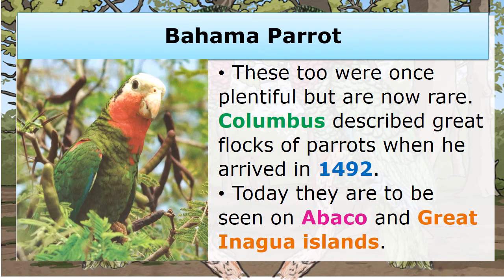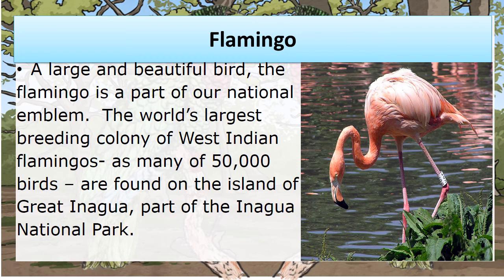The Bahama Parrot. These were once plentiful but are now rare. Columbus described great flocks of parrots when he arrived in 1492. Today they are to be seen on Abaco and Great Inagua Islands. The Flamingo — a large and beautiful bird — is part of our national emblem. The world's largest breeding colony of West Indian flamingos, as many as 50,000 birds, are found on the island of Great Inagua, part of Inagua National Park.